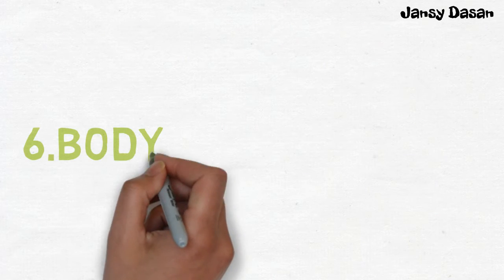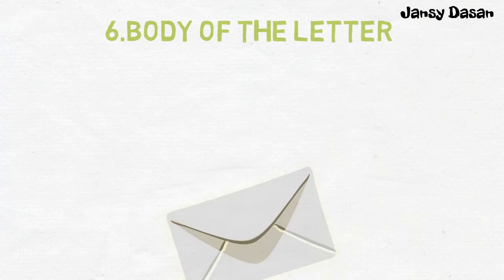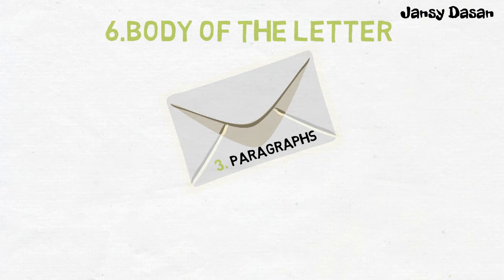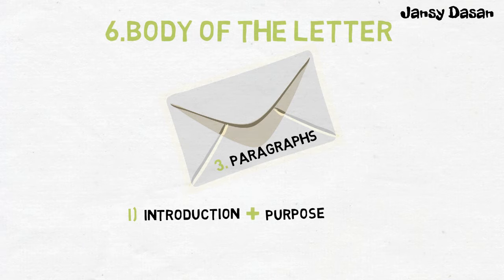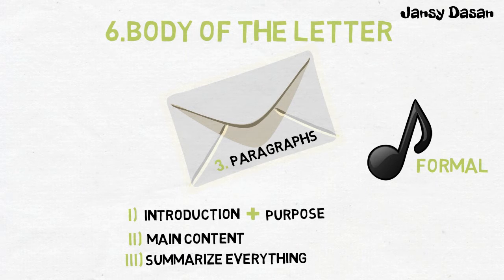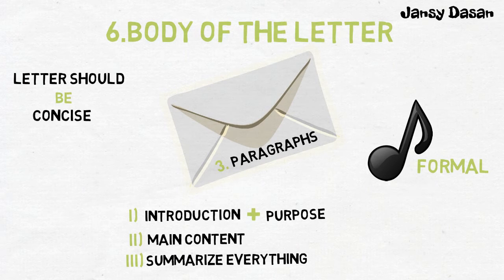Sixth one is the body of the letter. This is the main content of the letter and it is divided into three paragraphs. The first paragraph must have the introduction and the purpose of the letter. The second paragraph has the main content, that is, all the detailed information. The third paragraph summarizes the information. The tone of the content should be formal — we should not use any flowery language. The letter should be concise and to the point.